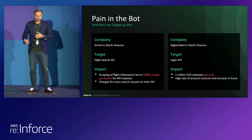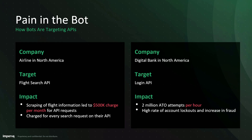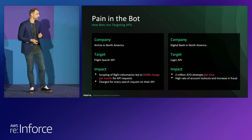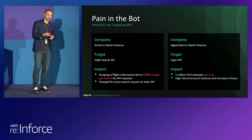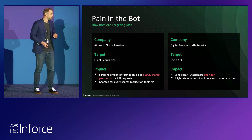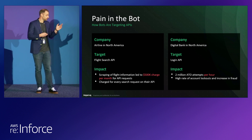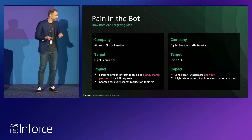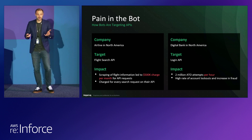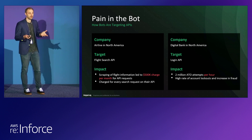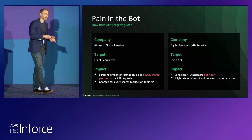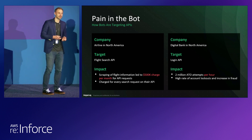One of the bigger challenges is that attackers are getting very smart about targeting APIs. We had an airline in North America with a flight search API that was being scraped, leading to $500,000 per month in charges because they were paying for all of those queries — that got their attention very quickly. Similarly, a digital bank in North America had their login API targeted with account takeover requests at a rate of 2 million attempts per hour. They had ATO protection for their web application but did not realize that the mobile API serving the exact same purpose was the next thing the attacker targeted.